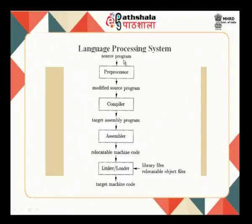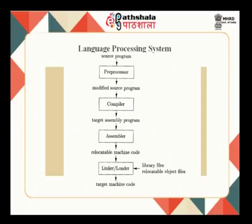This is a sequence of processing: you have a high level language which goes through a software system called a preprocessor. The preprocessor expands macros — hash include, hash define — and converts that into a complete source program. The source program is then given to the compiler, which converts it into a target assembly language program. The compiler needs the instruction set as input for generating assembly instructions.